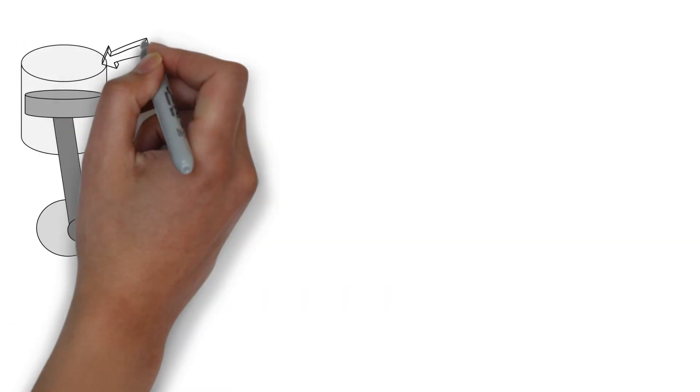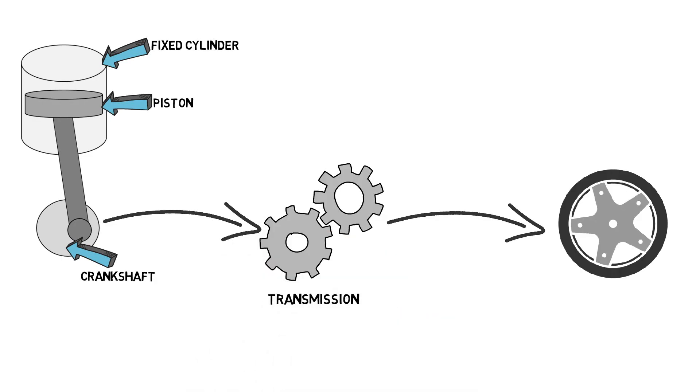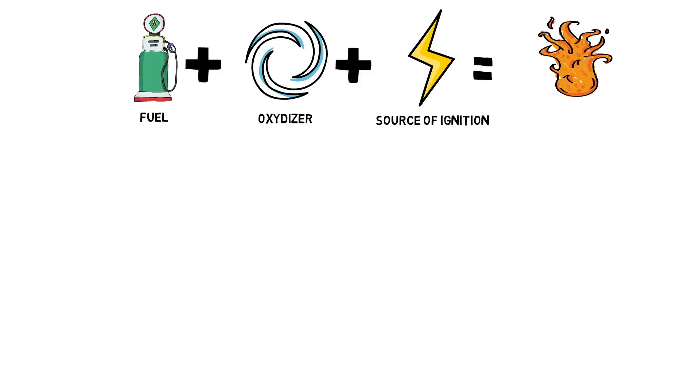Combustion itself happens inside a fixed cylinder that pushes down a moving piston and consequently rotates a crankshaft. Then the crankshaft is connected to a series of gears in the transmission that drives the wheels on your car through a shaft. But of course, this is just an oversimplified explanation.